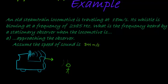So how does that work? Well, here's our frequency observed equals the speed of sound minus the velocity of the listener divided by the speed of sound minus the velocity of the source times the frequency of the source. That's our formula.